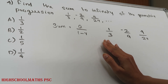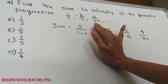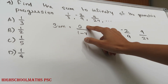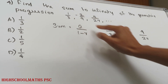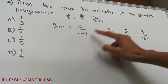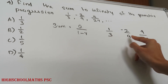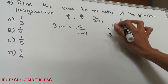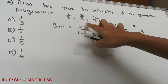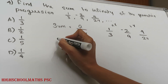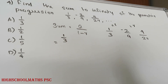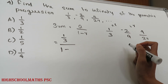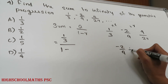Now the question is: find the sum to infinity of the geometric progression 1/3, minus 2/9, 4/27, etc. This is a geometric progression, and for sum to infinity we use the equation S equals a divided by (1 minus r). The first term a is 1/3. We need to find the common ratio r.